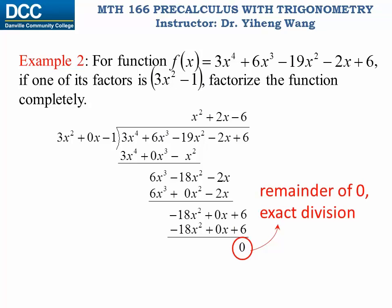Therefore, x squared plus 2x minus 6 is our quotient, which means that the original function equals to 3x squared minus 1 multiplied by x squared plus 2x minus 6. However, our job is not done yet, because this function is not fully factorized. To completely factorize this function, we need the function as a product of linear factors only. But here it is a product of two quadratic factors, so we need to continue to factor these two quadratic factors.